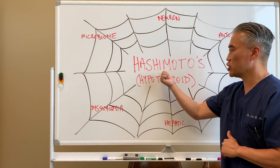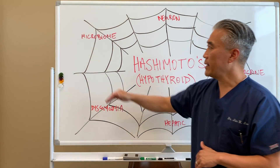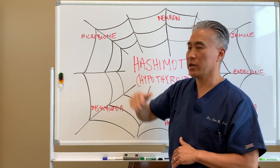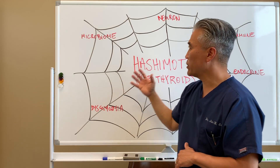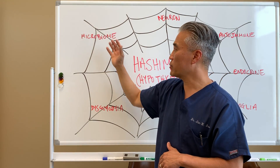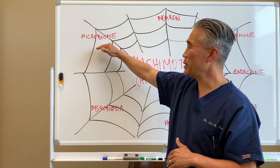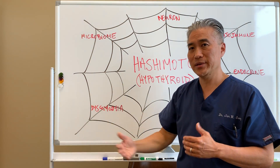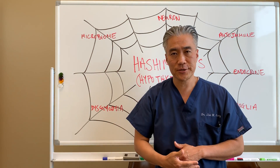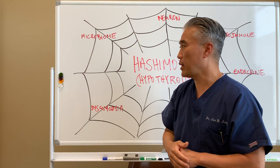In this picture, we have Hashimoto's right here, which creates hypothyroid. Hashimoto's can be affected by the gut microbiome. So in this web, the gut microbiome can be pulling or throwing off your Hashimoto's thyroiditis. Antibiotic therapy, stress, GI infection — all these things can create problems in the gut microbiome.